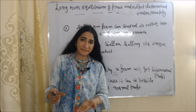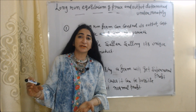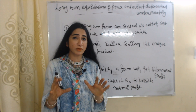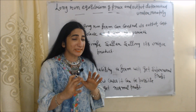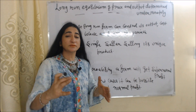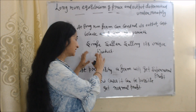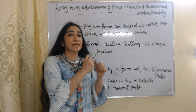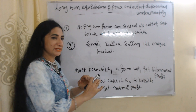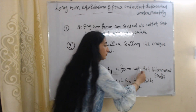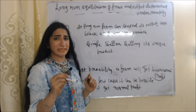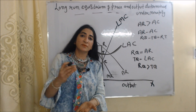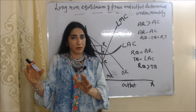Now we will talk about long-run equilibrium and how price and output are determined under a monopoly market. At the short-run, a firm can get supernormal profit, normal profit, or loss. But in the long run, the firm can control its output and cost because all factors are variable. Also, in monopoly, only a single seller sells a unique product — no other firm can enter the market. That is why in the long run, the firm will most likely get supernormal profit, with normal profit possible only in very few cases.